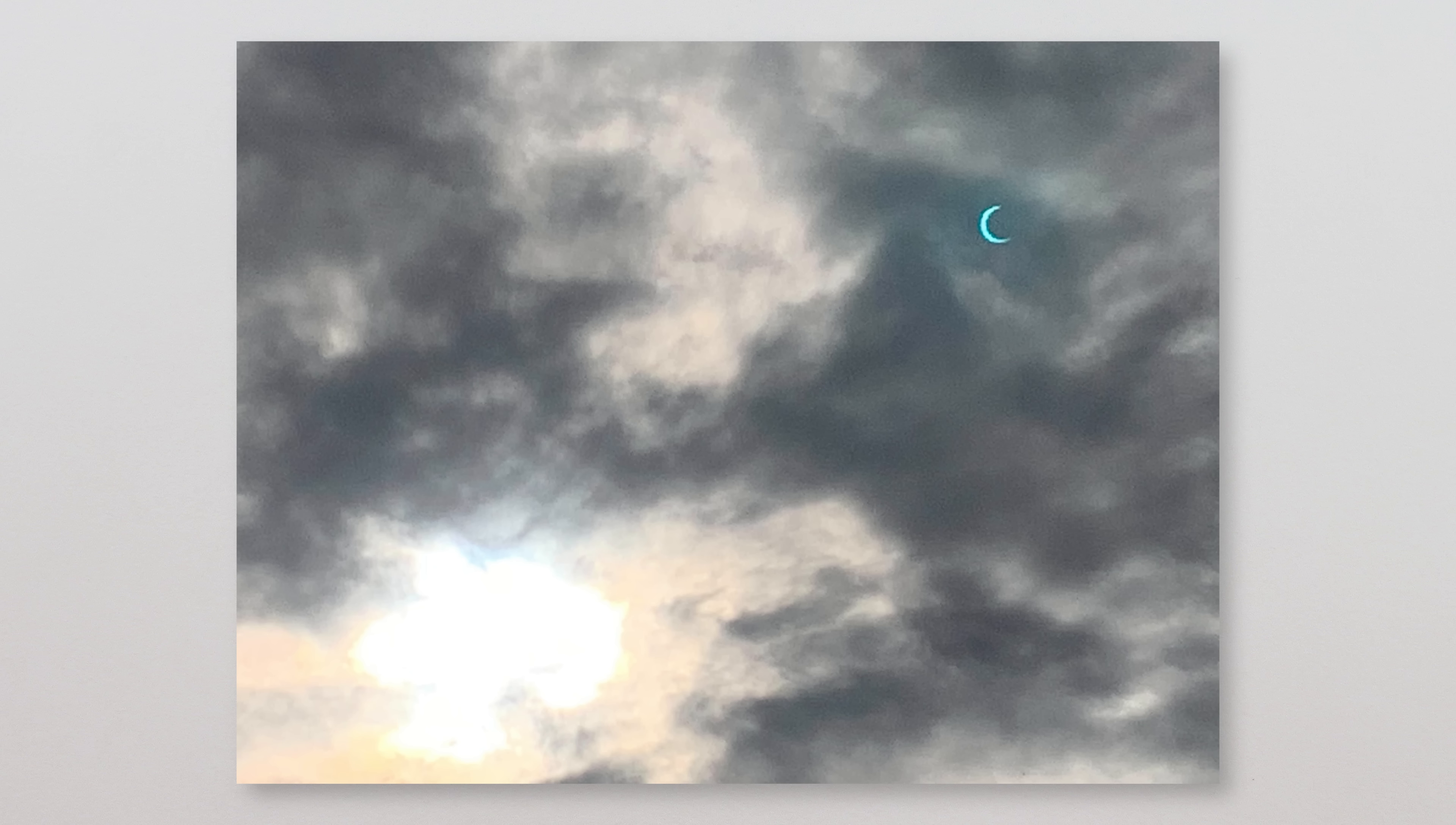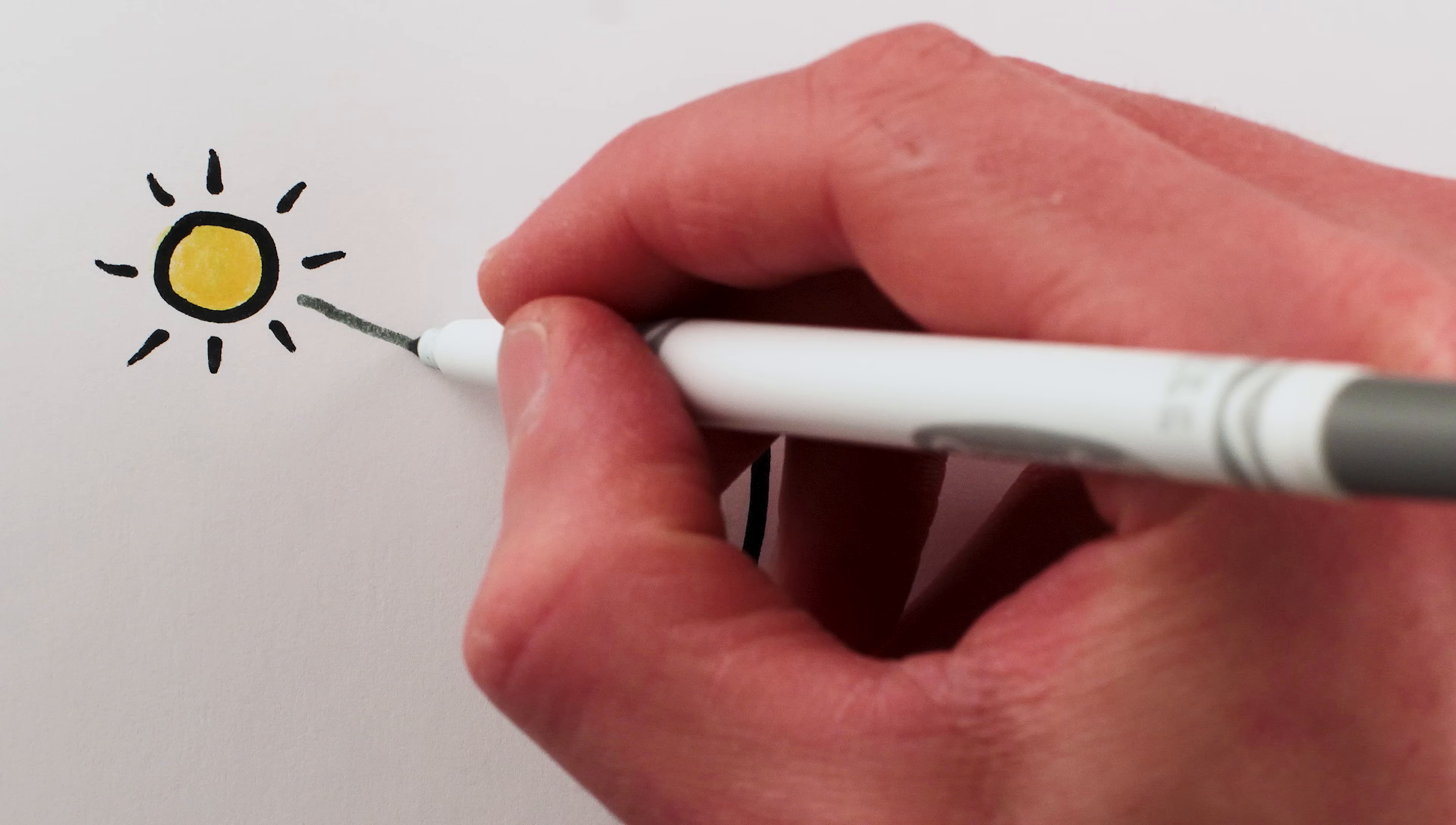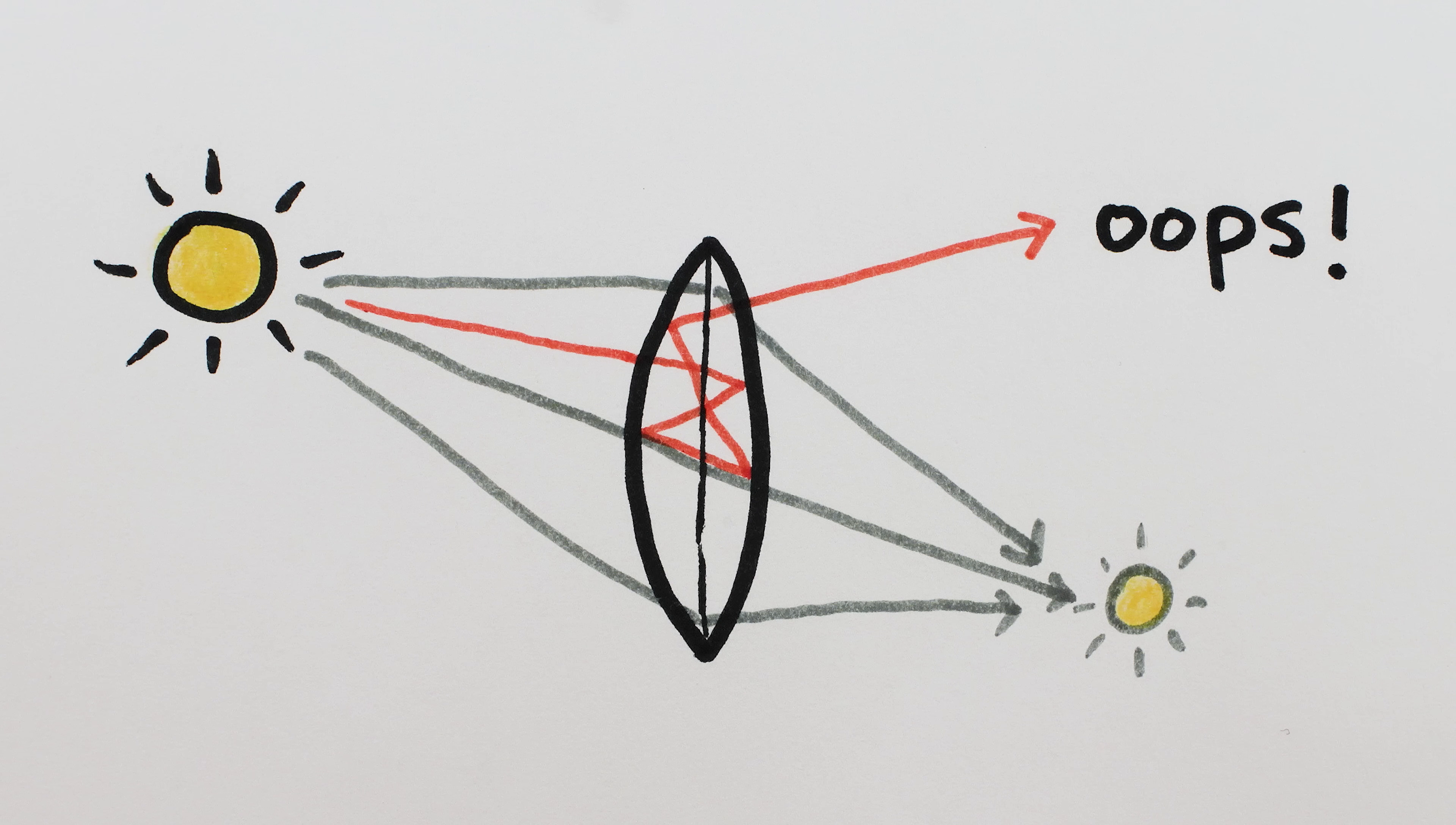And second, eclipse lens flares reveal some really interesting facts about lens flares in general. This is grossly oversimplified, but lens flares are basically an optical defect, they're light that passes through a lens in an unintended way.